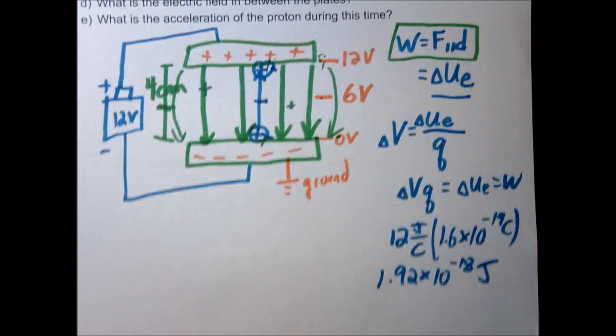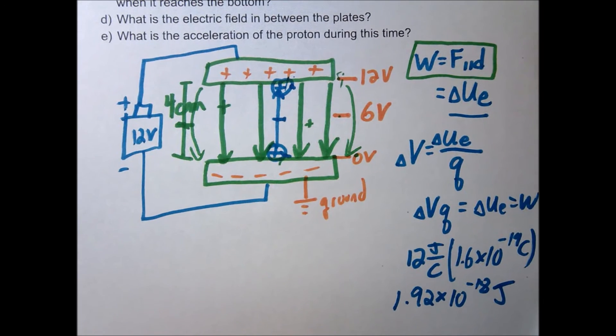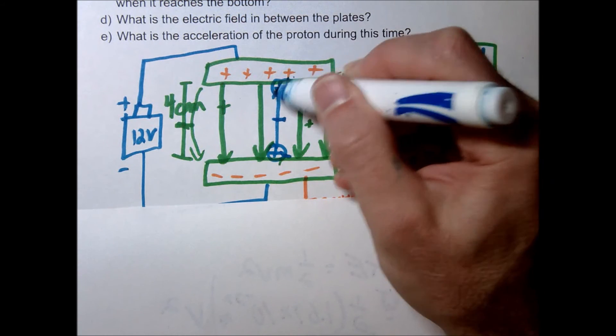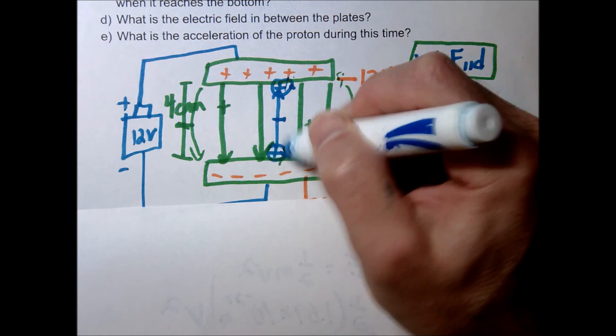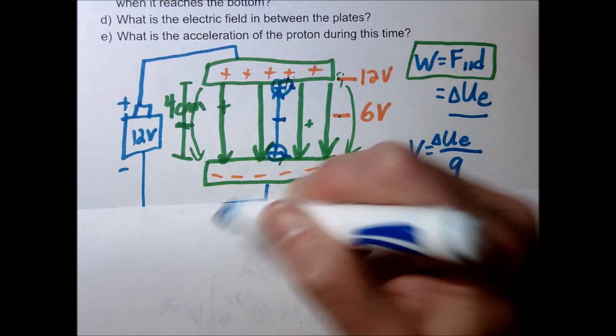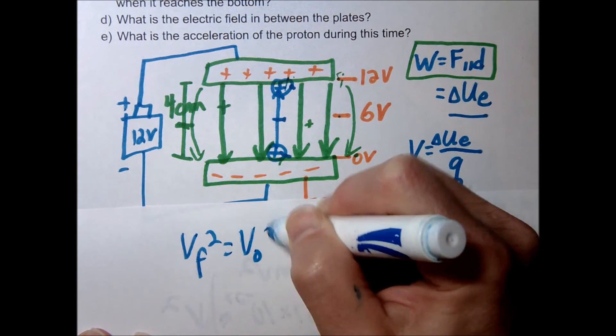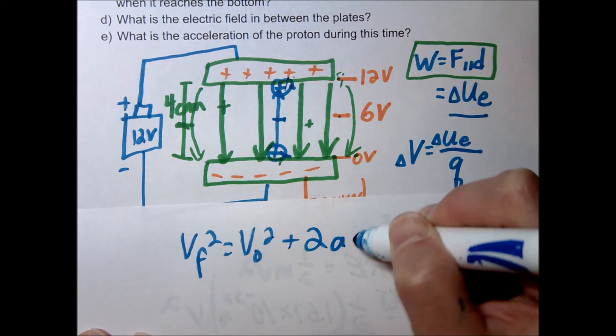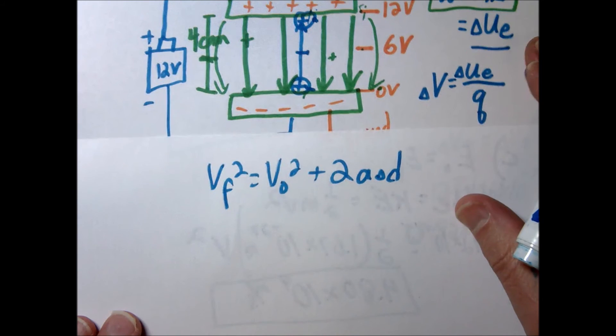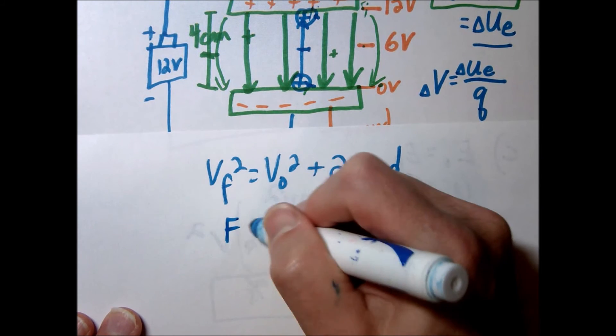The last question says, what's the acceleration of the proton during this time? So honestly, at this point, knowing what we know, the easiest thing probably to do would be to use some kinematics. We know the velocity at the top is 0, we know the velocity at the bottom is v final, and then we know the distance that it's traveled. Based on this problem, I would probably just simply use your good old kinematics equation here. But I'm going to show you kind of a different way to do this using F equals ma.